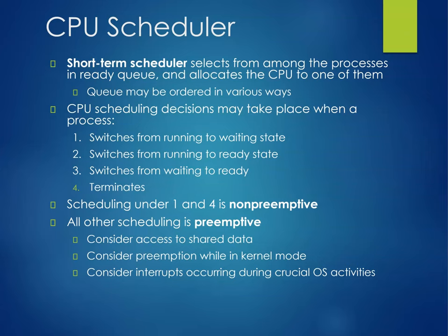Scheduling under conditions one and four is non-preemptive. All other scheduling is preemptive. Non-preemptive means it cannot be interrupted. The other two can. In preemptive cases, you have to consider access to shared data, preemption while in kernel mode, and interrupts occurring during crucial OS activities.